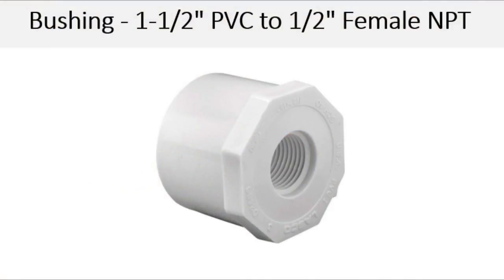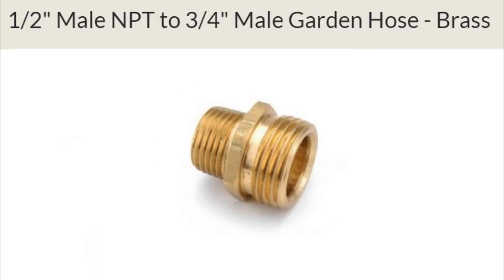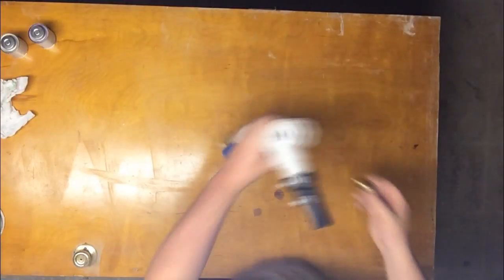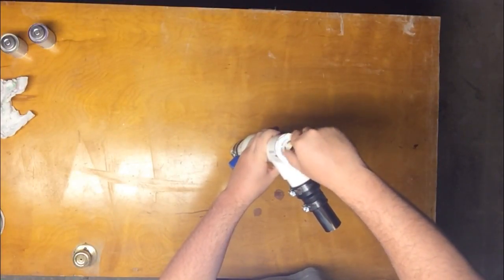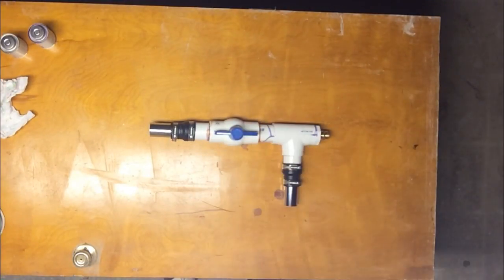Next you'll need to purchase a bushing that goes to one half inch female threads and get a garden hose converter that has one half inch threads. You're going to glue the bushing into the last end of the T and then thread in the garden hose converter and this is the final assembly of your custom diverter valve.